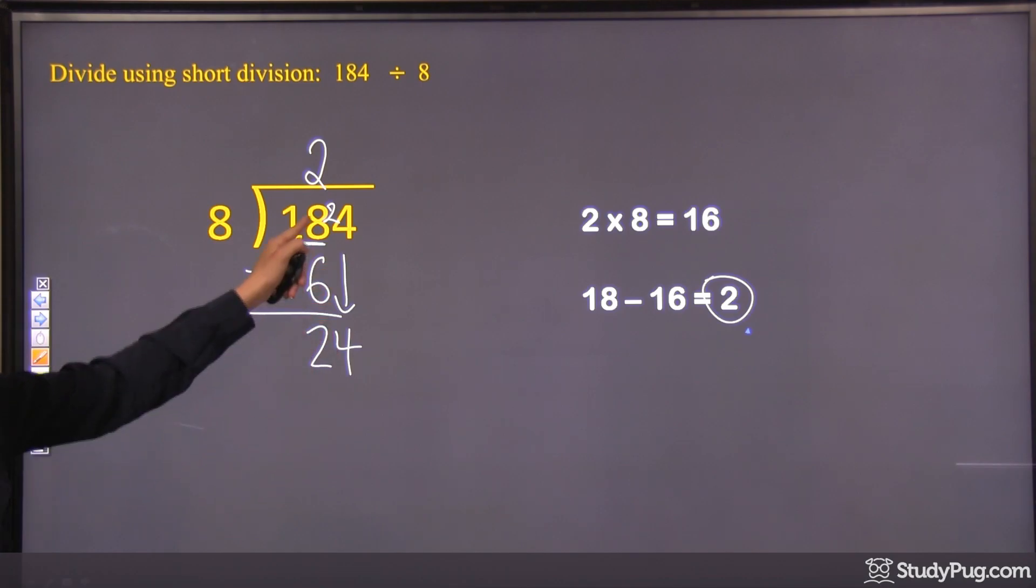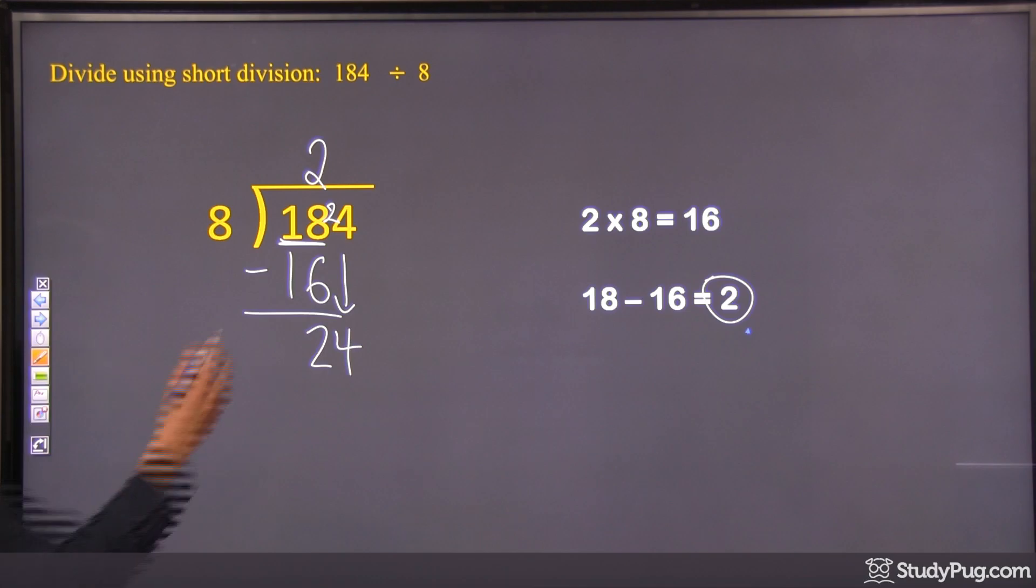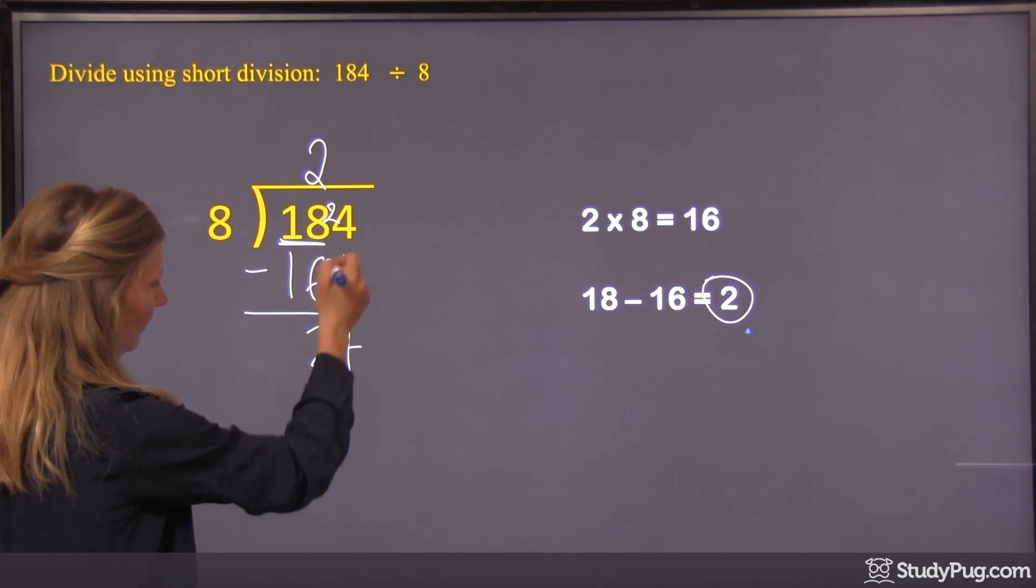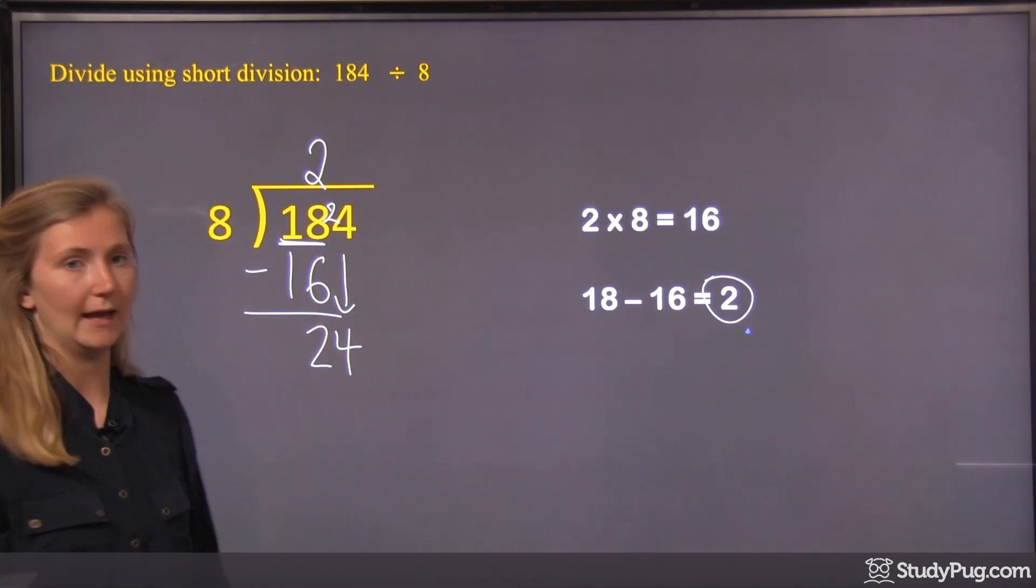And see how then that makes 24, right? Just like instead of bringing down, we have a 24 up there. Okay? And so then our next step of division would be 24 divided by 8. Which is the same thing as if we did the long division. We brought down the 4. Our next step of division would be 24 divided by 8.